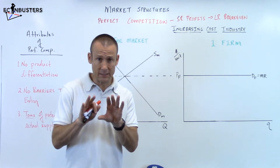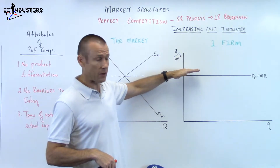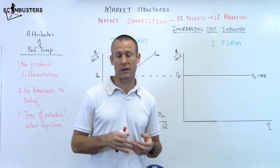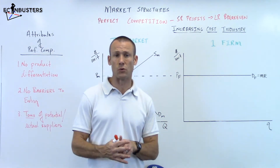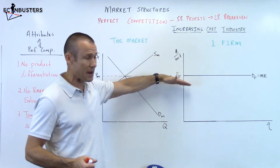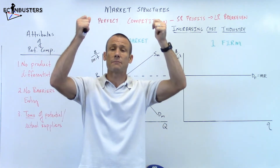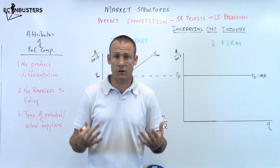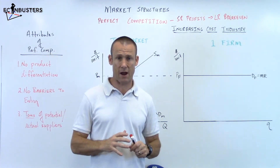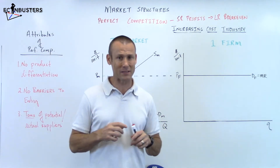In a constant cost industry, we've got supply shifting to the right, the price firm D-firm MR line going down, but you don't have to shift the ATC line or the MC line — it's pretty simple to do. In an increasing cost industry, as supply shifts right and that demand firm and MR curve head down, both the ATC and the MC have to go up. You're going to have to shift three curves at the same time. That's pretty complex and it leads to a very messy graph, which you're going to see at the end of this video.